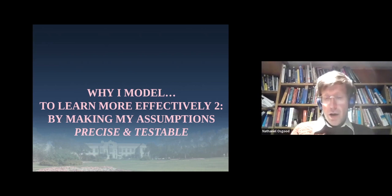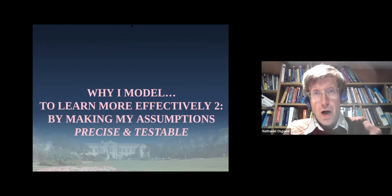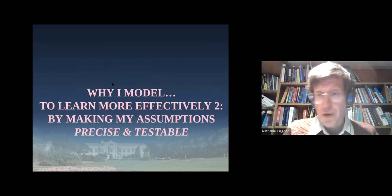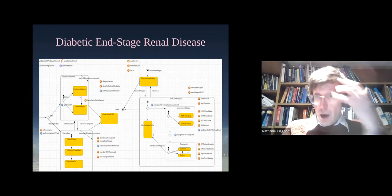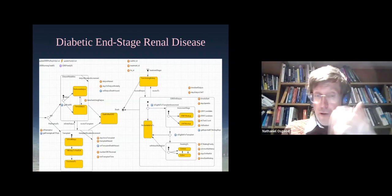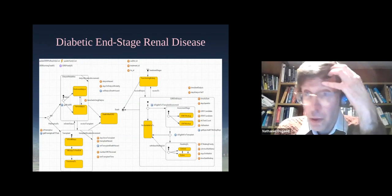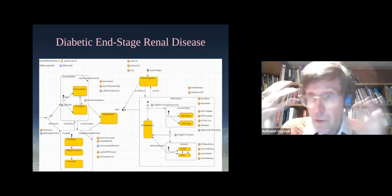A second need that models help with in terms of learning is to aid in making our assumptions more precise and testable. We make our assumptions explicit by putting them down in a fashion where the structure is clear and people can critique it. That's something models help us do. If those assumptions were in our head, we couldn't do that — people can't see our assumptions. It's really when we put them in the clear light of day that we invite critique, and the learning that comes with it.